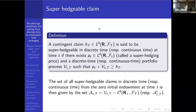A super hedgeable claim is an amount of money such that I can begin with an initial capital p_{small t}, choose a strategy, and have a portfolio value at time T that is larger than a target amount G — so that I can give this amount to someone. The set of all super hedgeable claims is denoted accordingly and coincides with the set of portfolios minus a positive F_T-measurable quantity.